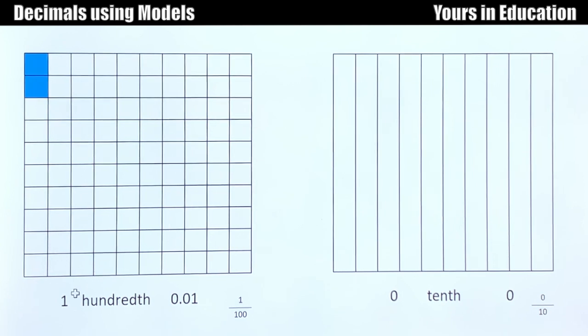Now what do we have here? We have 2 hundredths. We're going to make this plural, and you write it in decimal 0.02, and as a fraction is 2 out of 100.